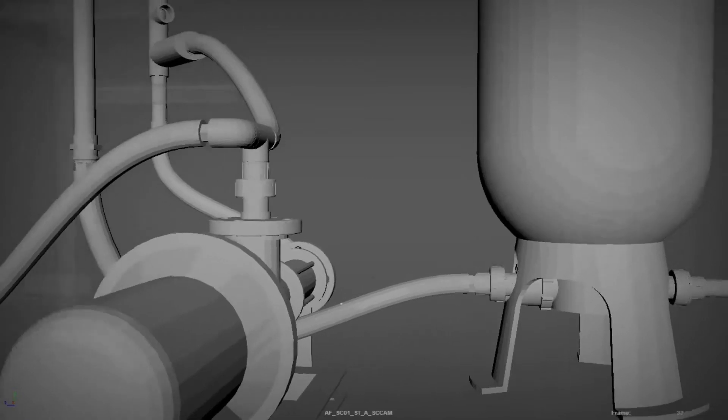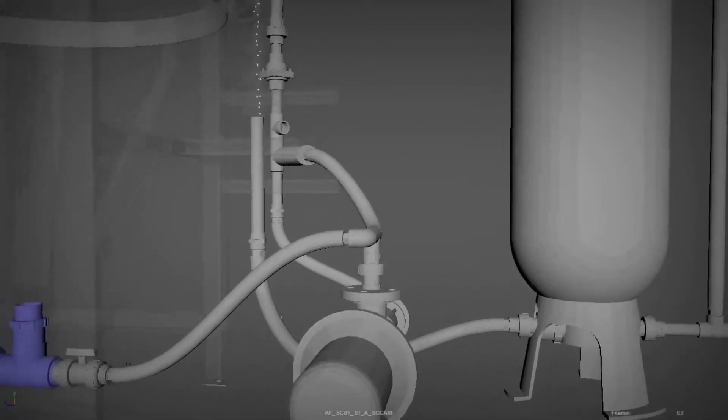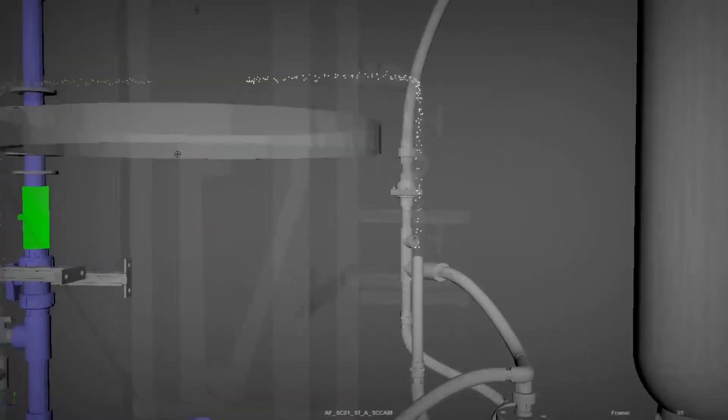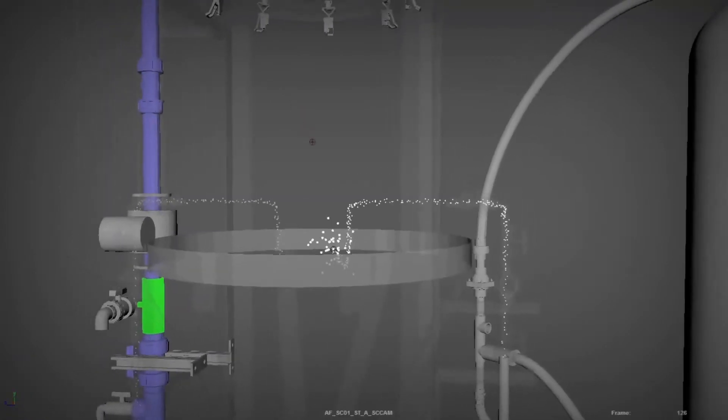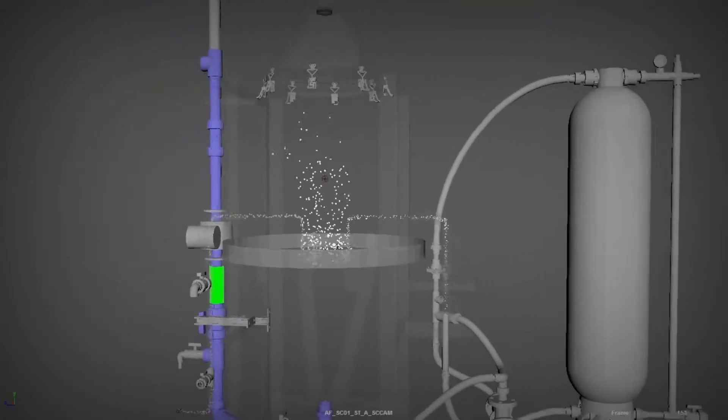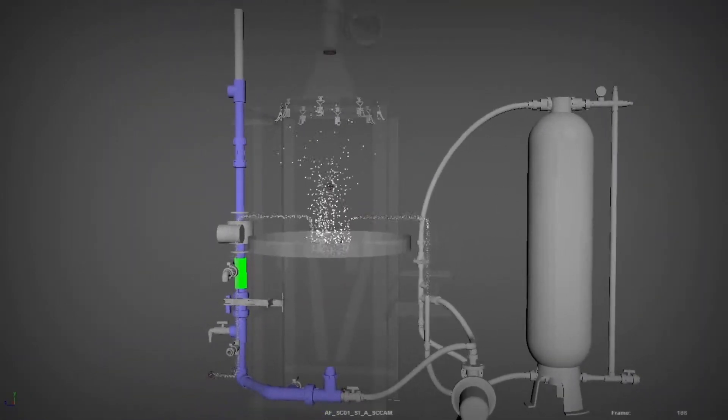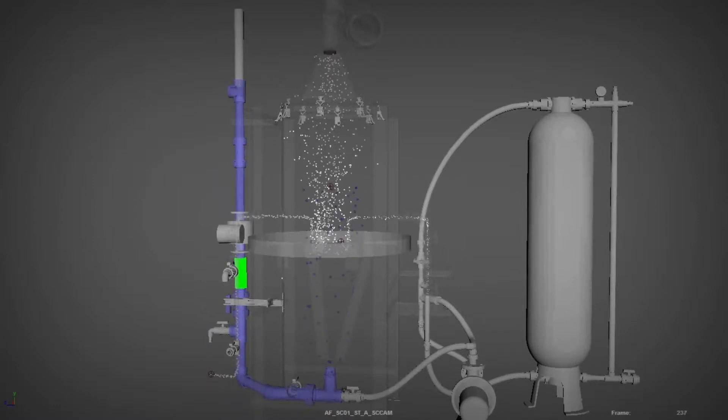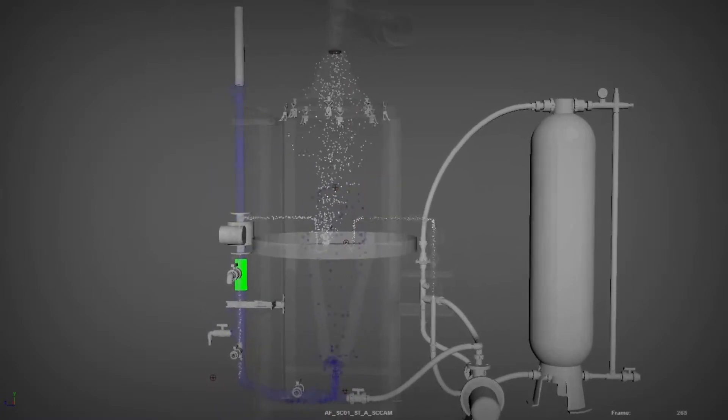As the chemically treated wastewater enters the DAF tank, it is mixed with a degassing stream of recirculated water. This water has been supersaturated with air under pressure. The microscopic air bubbles adhere to the waste contaminants, floating them to the top of the tank, building up a layer of sludge.